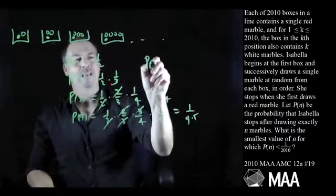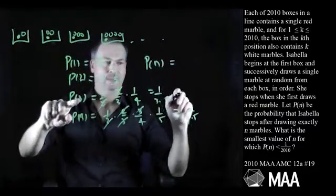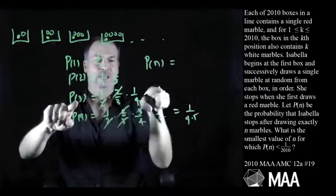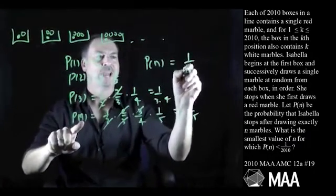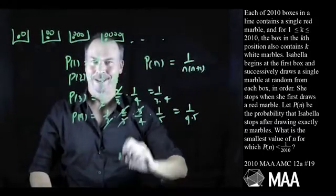It looks like p(n) is given by the formula: p(3) is 1 over 3 times 4, p(4) is 1 over 4 times 5, so p(n) equals 1 over n times (n plus 1). Okay.